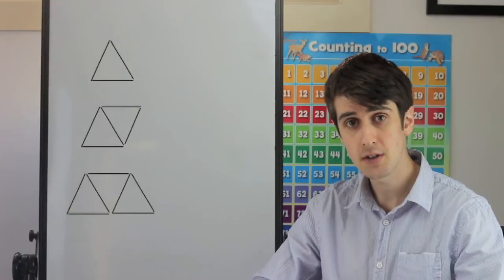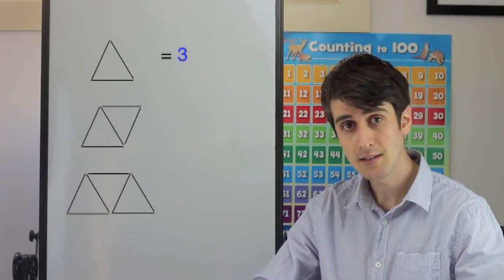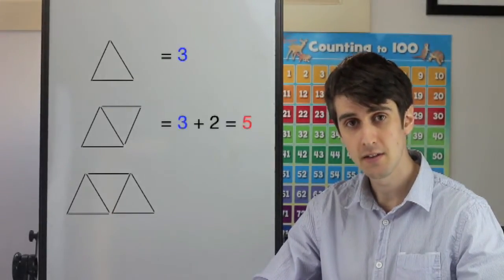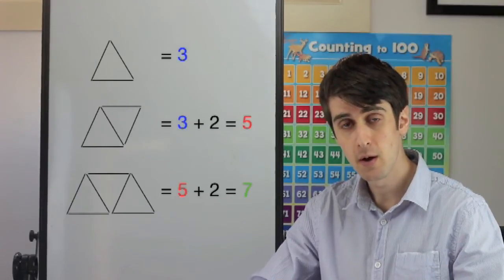We can see that the first diagram starts with a triangle made of three matchsticks. As the diagrams progress, each one gains another triangle and adds another two matchsticks to the pattern. So, if we are going to express this within an algebraic formula, it would look a little something like this.